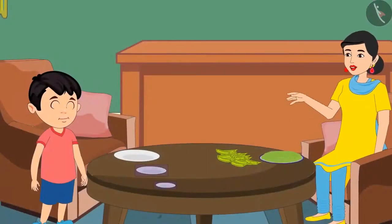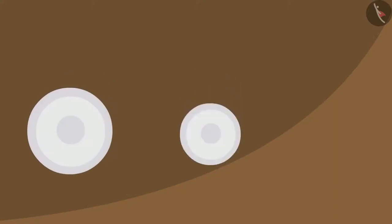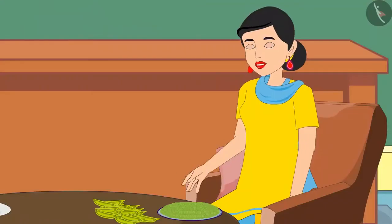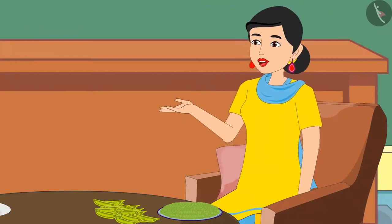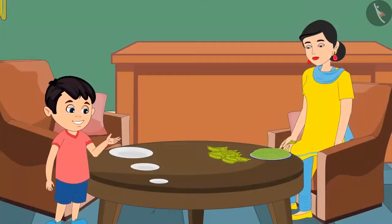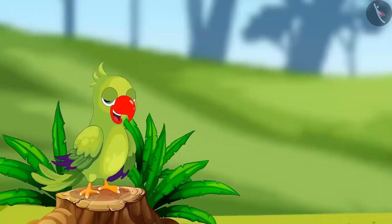Chotu, you are right — both these plates are smaller than this plate. Can you tell me which is the smallest among them? Yes Mom, this plate is the smallest. Isn't it, Mom? Yes, Chotu, you are absolutely right. Now put the other two plates back, please. Children, did you see? This is the smallest plate among these three plates, and this is the largest plate.